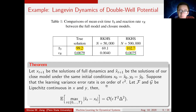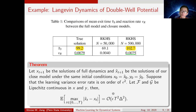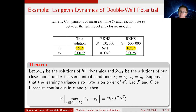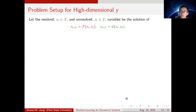For this double-well potential Langevin dynamics, we also compare the mean exit time and the reaction rate. We see that all these long-term statistics can be well estimated. Here is also the theorem that says the error is proportional to Epsilon, where Epsilon is the standard deviation of the learning error rate, and capital T is the time and delta is the time step.